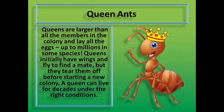Queen ants are larger than all the members in the colony and lay all the eggs — up to millions in some species. Queens initially have wings and fly to find a mate, but they tear them off before starting a new colony. A queen can live for decades under the right conditions.